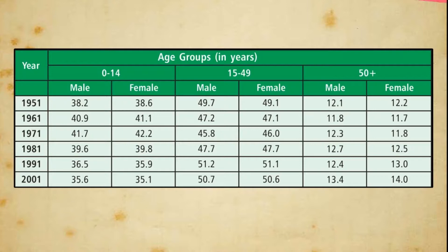India has 34% of its population in the younger age group and 5% in the old age group, meaning 39% of the population is dependent on 61% working population. The people in the age group of 15 to 64 years are the productive population that make the country prosperous. The other two groups are dependent population and need continuous care. Countries with larger productive populations offer people a better quality of life.